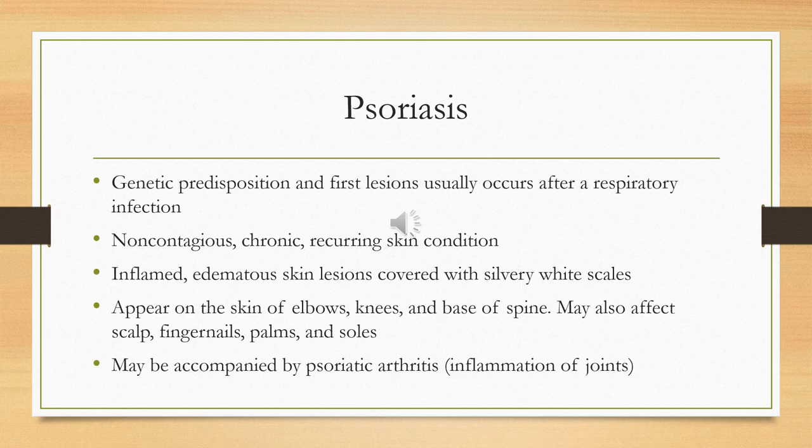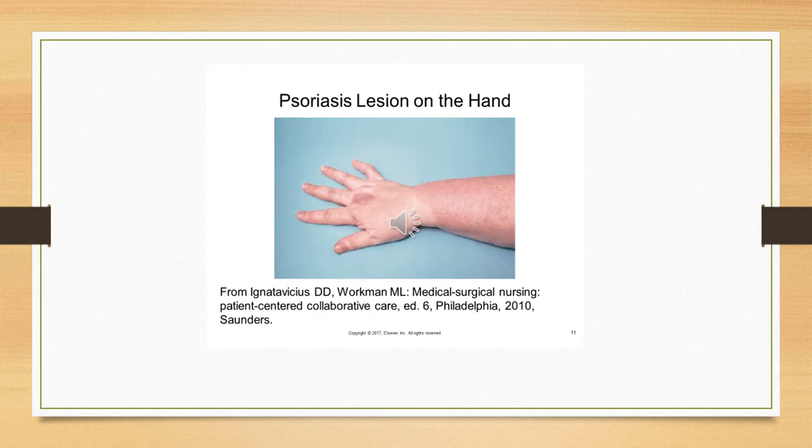Psoriasis can be triggered by respiratory infection and sometimes individuals also have psoriatic arthritis, which is inflammation of the joints. Many times psoriasis will go into spontaneous remission and clear up without treatment. The book on page 994, figure 43.1, has pictures of what psoriasis might look like.